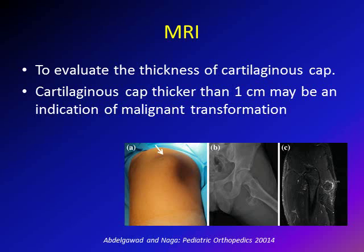Here is a patient with a large osteochondroma swelling. The x-ray raised suspicion of malignant transformation, so an MRI was obtained. The cartilaginous cap measured only 4.2 millimeters, indicating a benign lesion. So MRI is obtained when malignant transformation is suspected, and if the cap is more than one centimeter — which is not visible on x-ray — it may indicate malignant transformation.